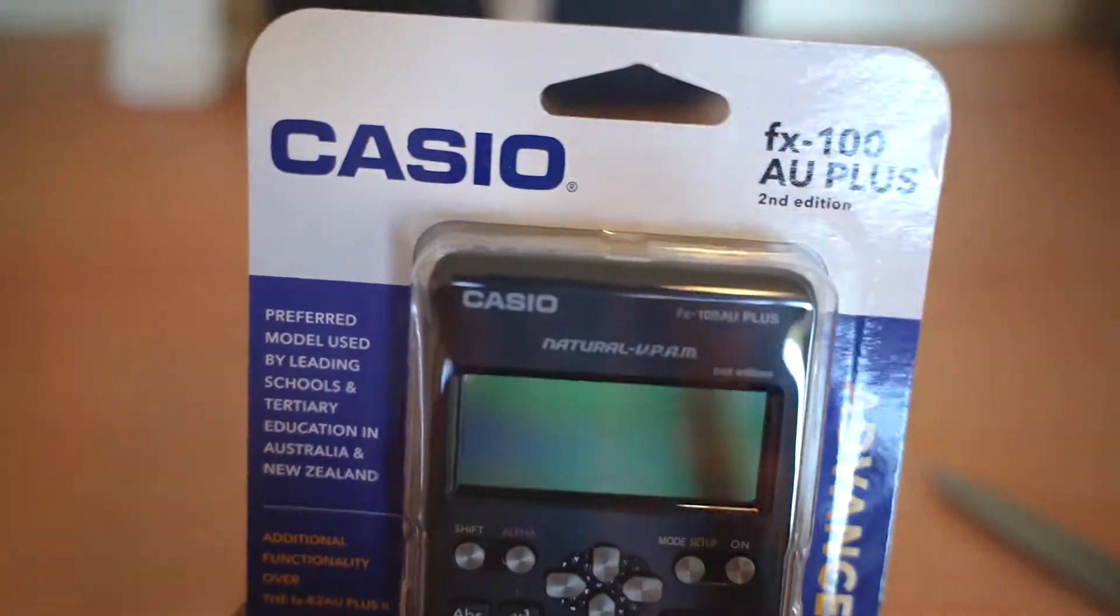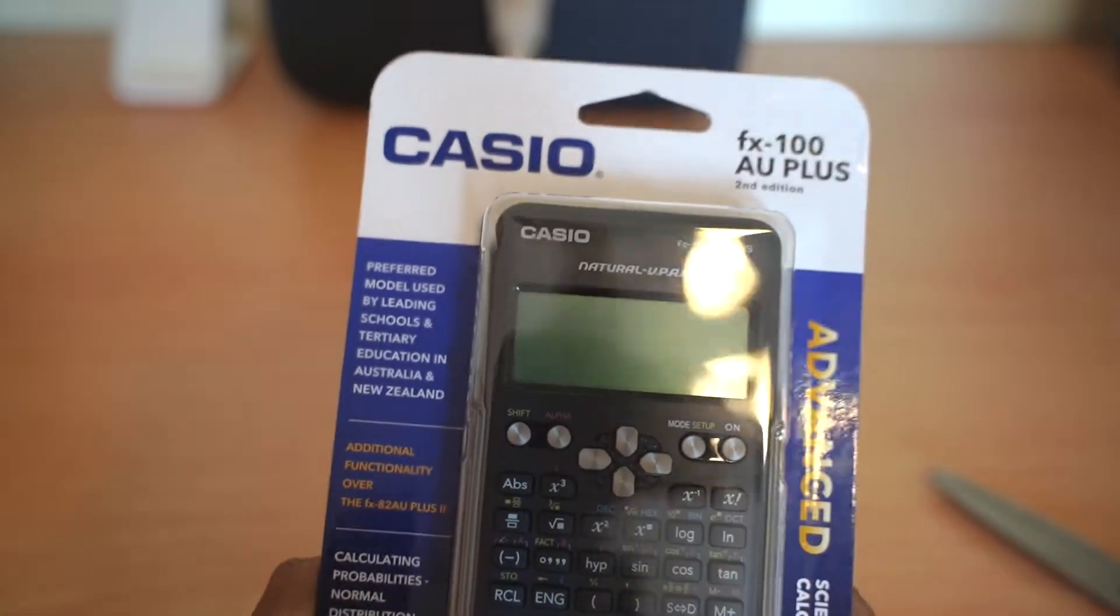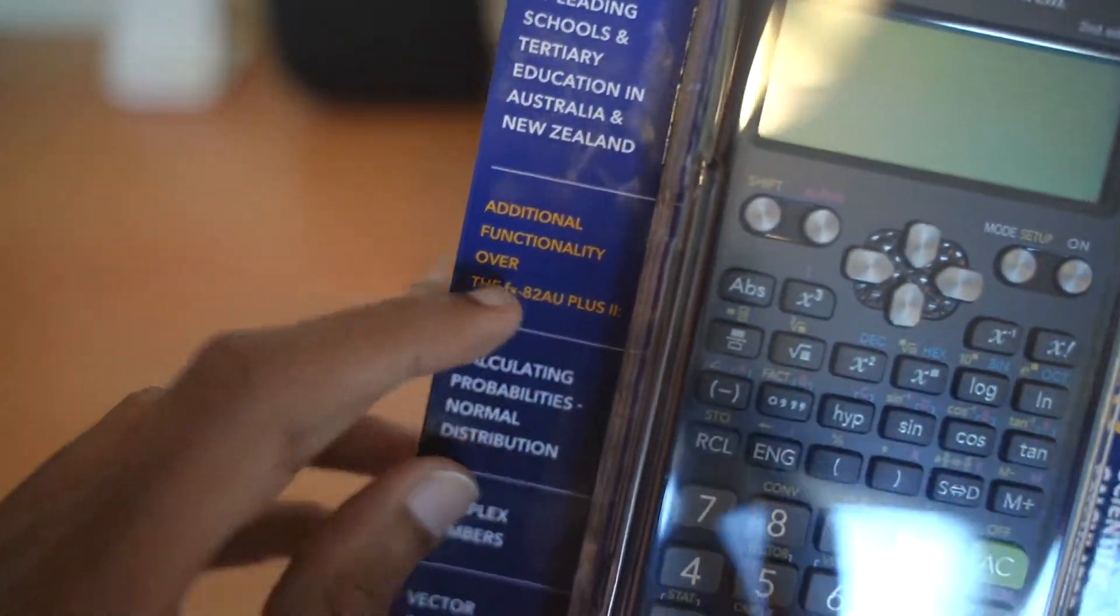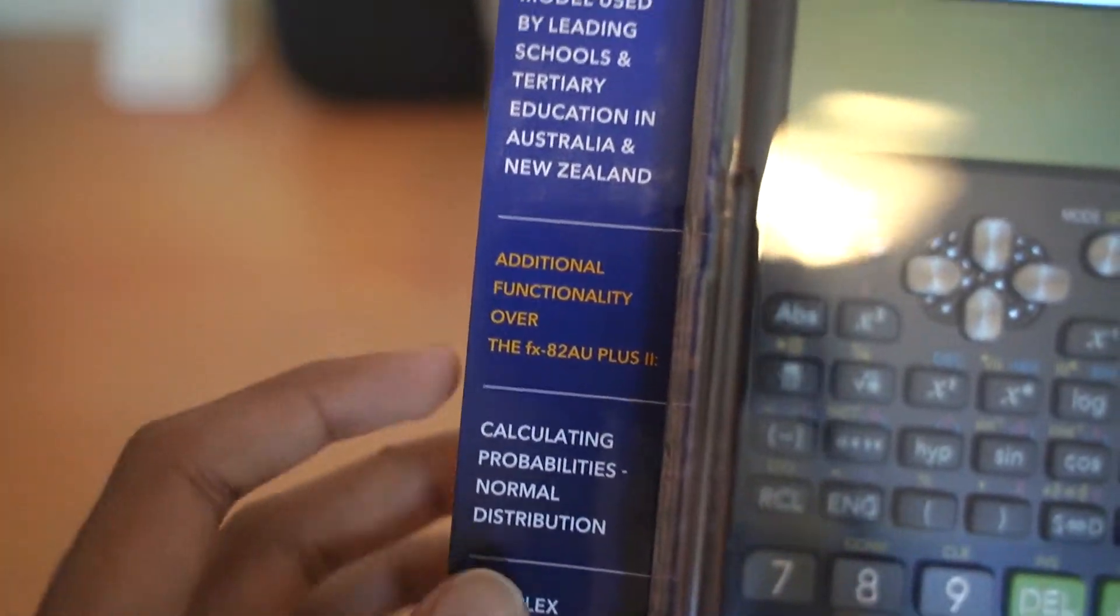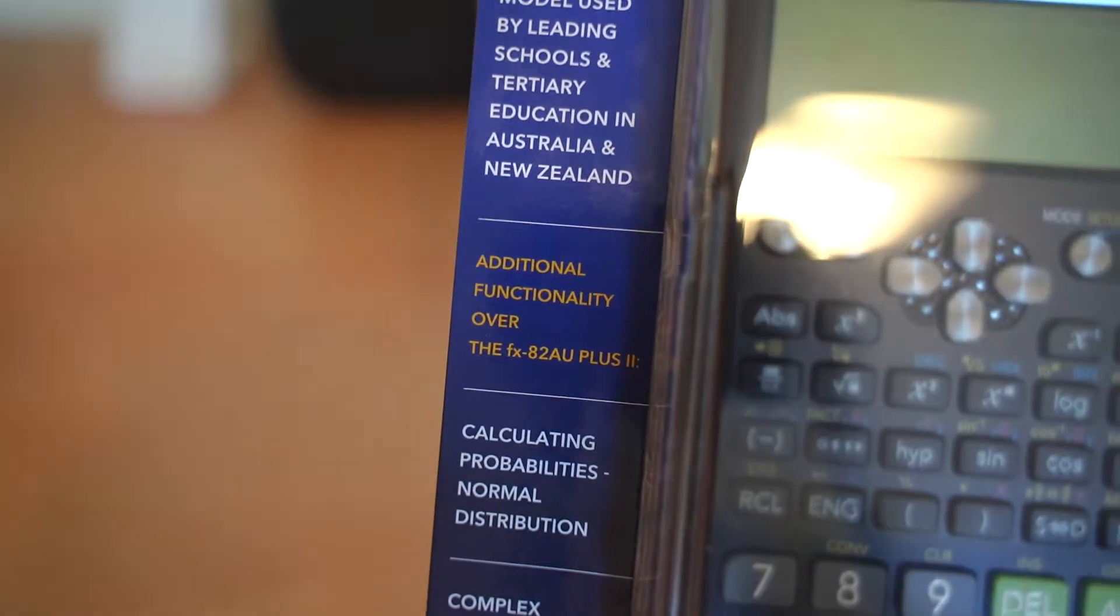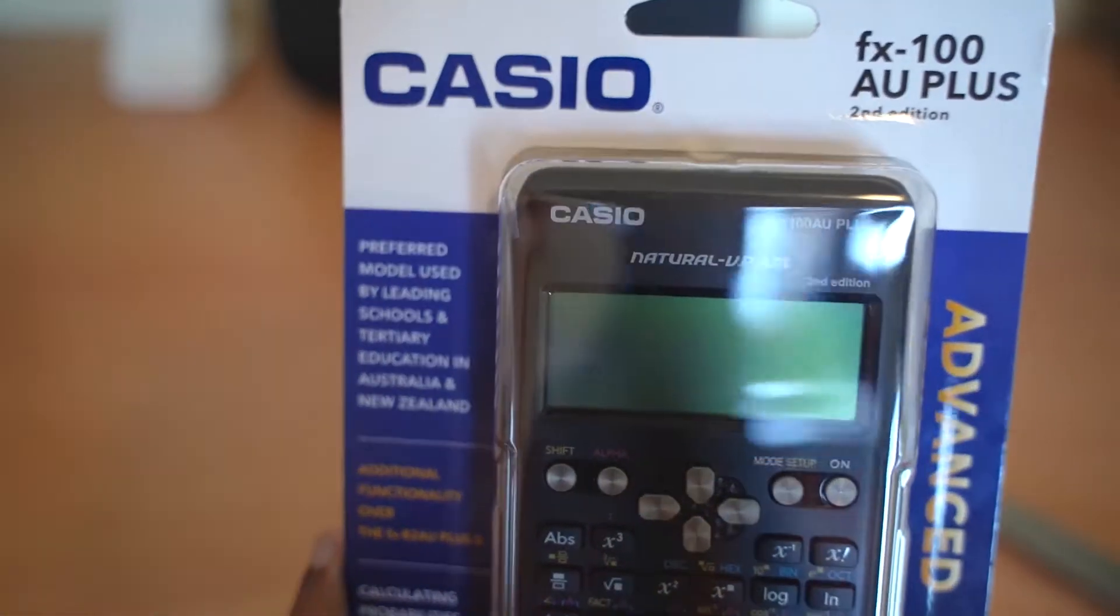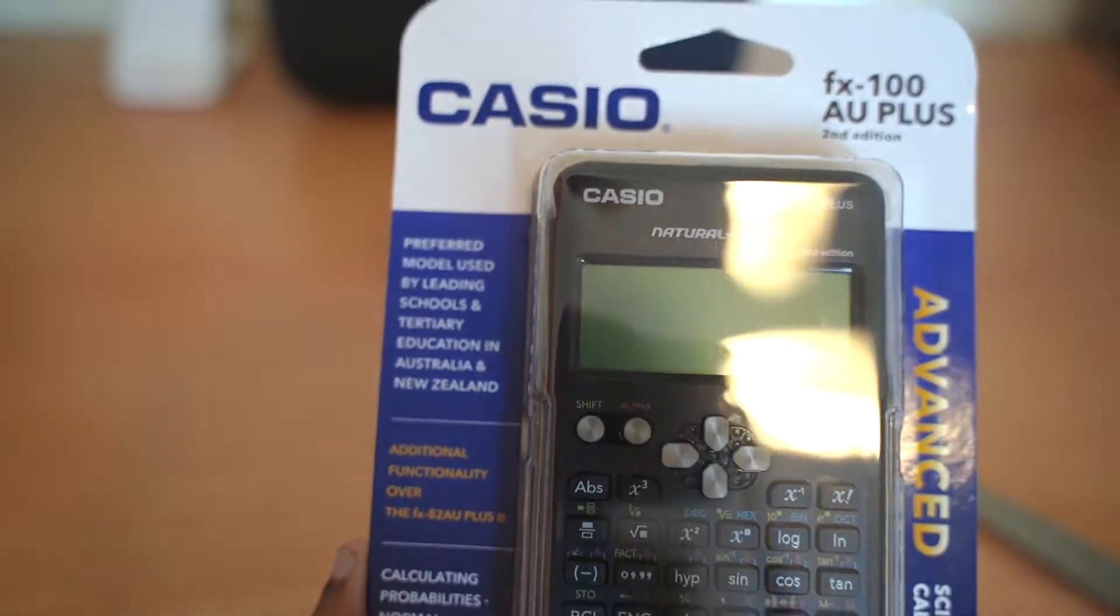This was 54 dollars at the time when I bought, 54 Australian dollars. If you don't need the complex number calculations, you can get the FX82 plus 2 for around 34 Australian dollars. But these are not cheap. They are actually expensive when you consider.